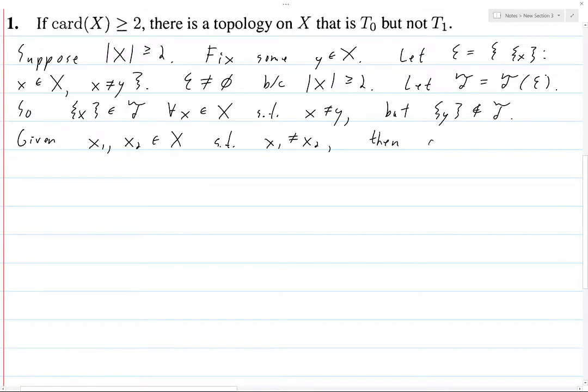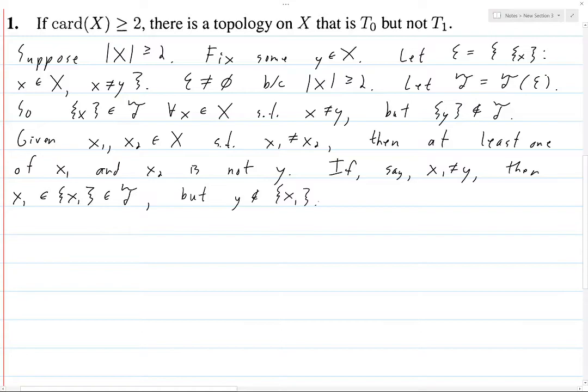So given x1 and x2 in X such that these are different, then at least one of x1 and x2 is not y. If, say, x1 is not equal to y, then this means that x1, the singleton set, then x1 is contained in the singleton set {x1} which is itself an open set of the topology, but y is not in the singleton set {x1}. Thus X is T0.